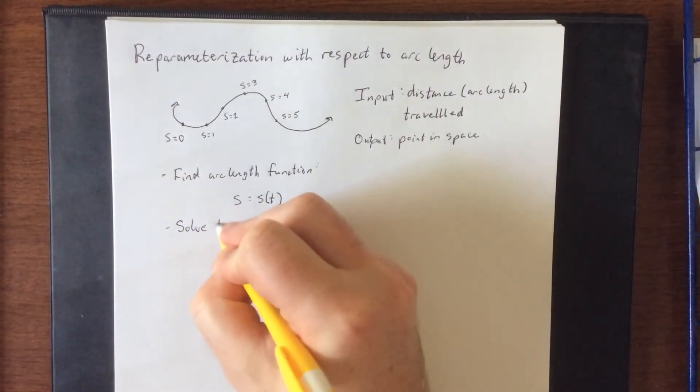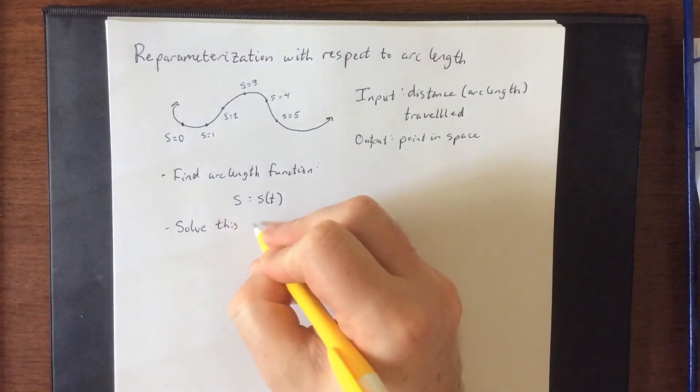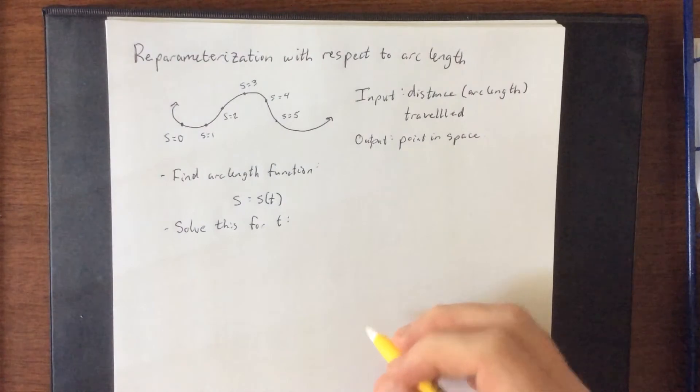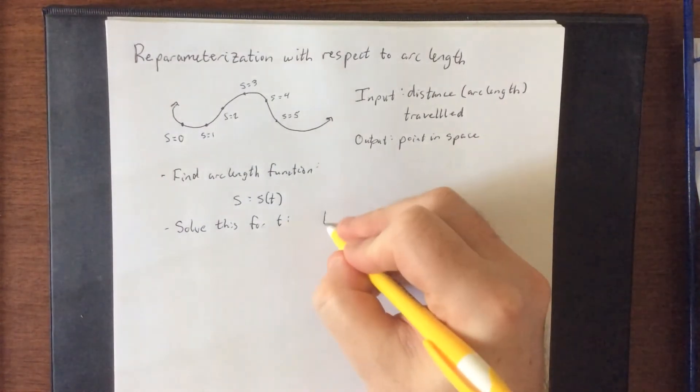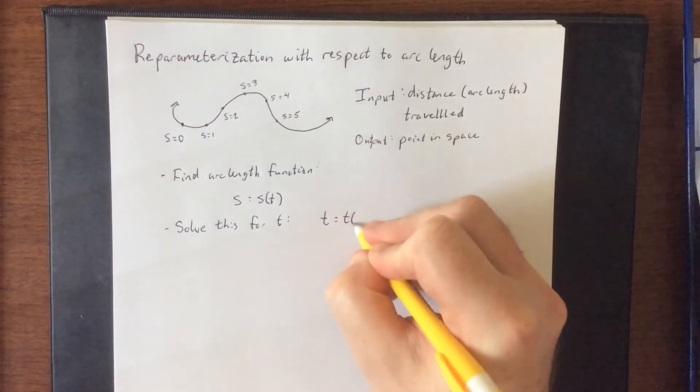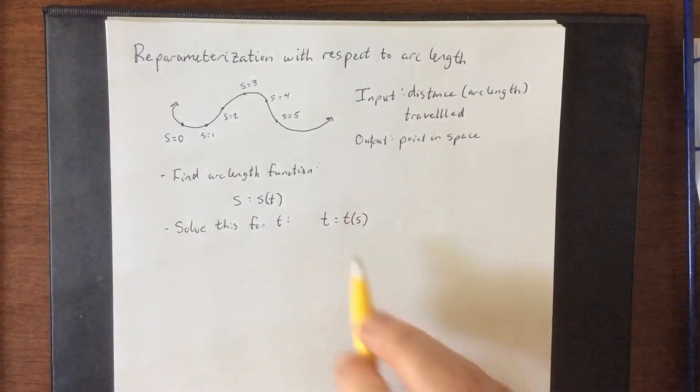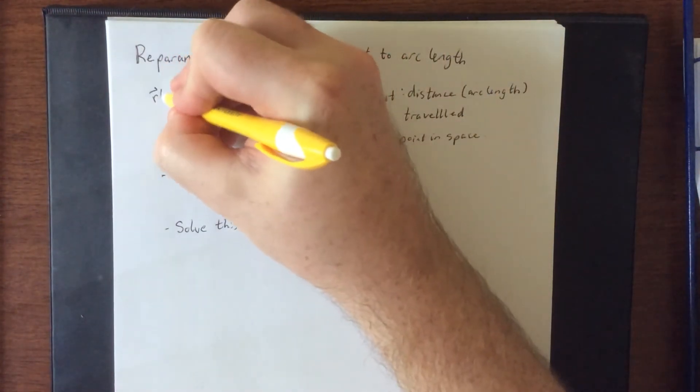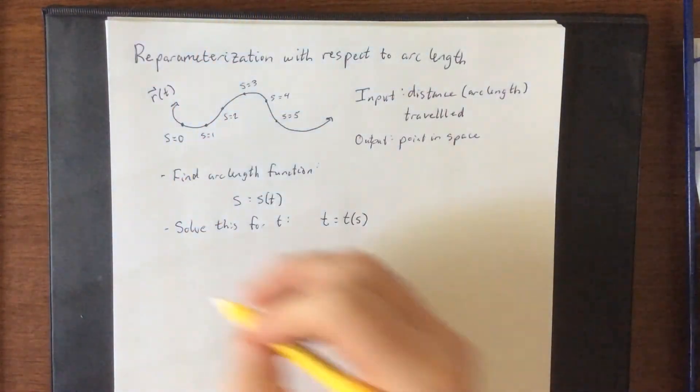We are going to solve this for t, assuming that it is a one-to-one relation. So now we have t as a function of s. So once you have t as a function of s, you're going to make that substitution back into what the original vector function is.